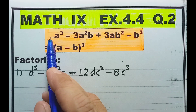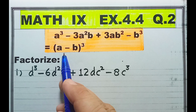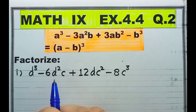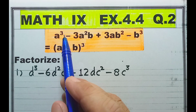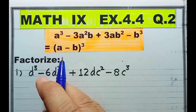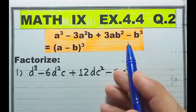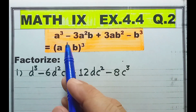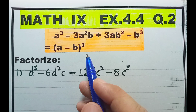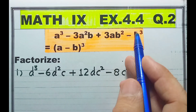Ab is formulae ko question 1 mein jo formula humne use kiya, usse compare kar lijiye. Aap dekh sakte hain, tamam coefficients, variables, aur powers same hain. Fark sirf signs ka hai. Is formulae mein tamam signs positive hain, jabke is formulae mein signs different hain: plus, minus, plus, minus. Aur second step mein sign hai minus ka. Yaad rahe, factorize karte hain humne follow karna hai is arrangement ko. Signs ka focus kijiye: plus, minus, plus, minus. Toh agar koi sawal humein is order mein nahi milta, toh humein rearrange karna hoga. Is order mein lana hi hoga.